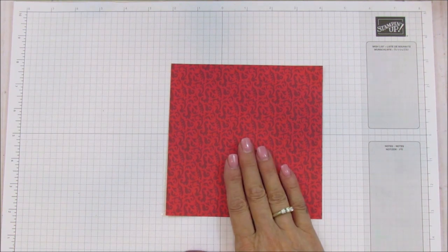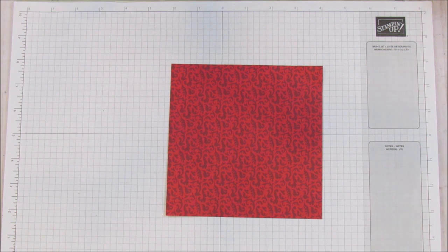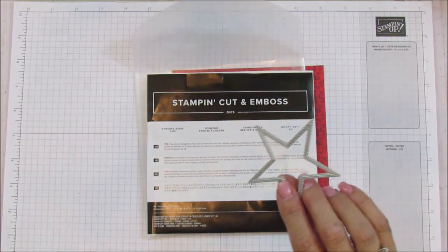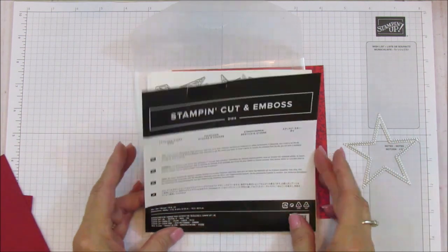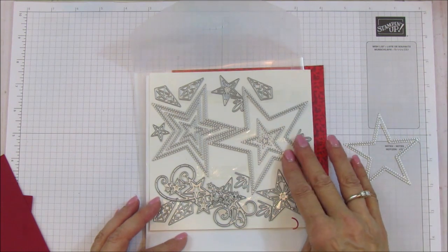And then we are using these stitched stars dies. Now I'm using this one here - this is a huge set. Look at these - there's so much to use and they're all stitched and beautiful. This is a beautiful little swirl with stars and I'm actually going to share a card probably next week using that.